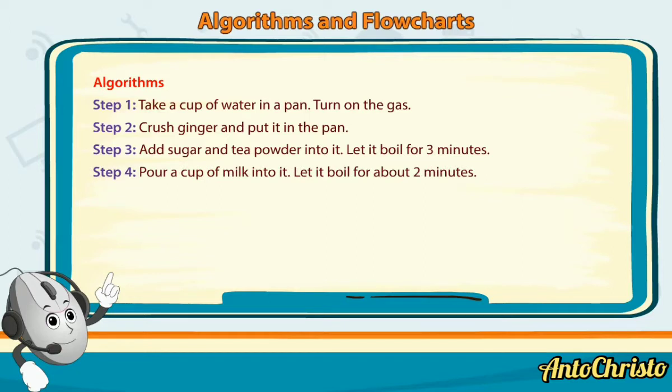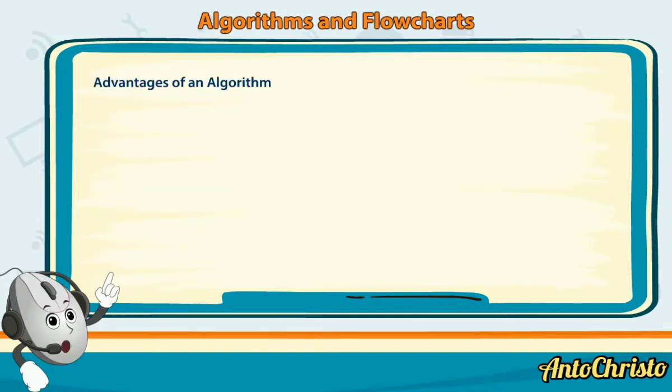Step 4: Pour a cup of milk into it. Let it boil for about 2 minutes. Step 5: Filter all the solid and enjoy the tea. Advantages of an algorithm. Algorithms are advantageous in the following way.